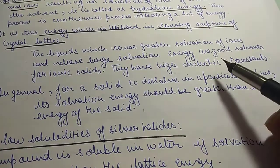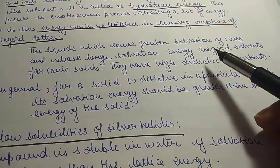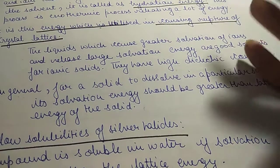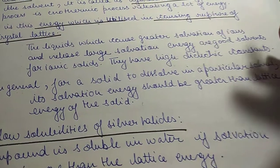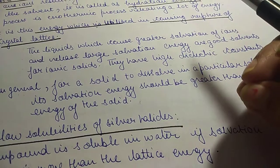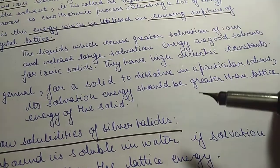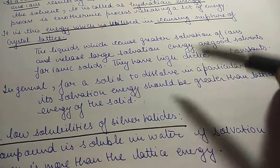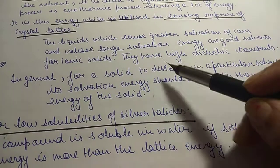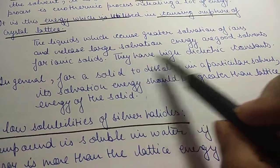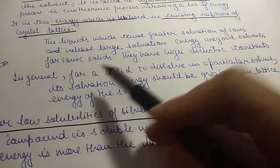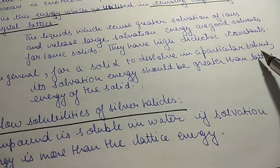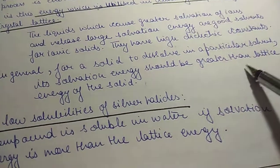Liquids which cause greater solvation of ions and release large solvation energy are good solvents. For any ionic solid to dissolve in water, the prior requirement is that its solvation energy should be greater than the lattice energy. In general, for a solid to dissolve in a particular solvent, its solvation energy must be greater than the lattice energy of the solid.